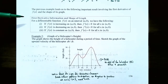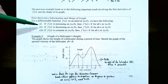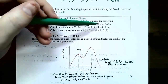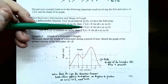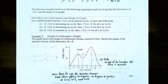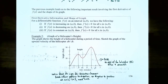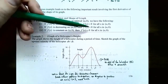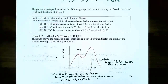This leads to an important result: First Derivative Information and the Shape of the Graph. For a differentiable function f(x) on interval (a, b): (1) if f(x) is increasing, then f'(x) > 0 for all x in (a, b); (2) if f(x) is decreasing, then f'(x) < 0; (3) if f(x) is constant, then f'(x) = 0. So the function increasing means the tangent line slope is positive, decreasing means it's negative, and constant means the derivative is zero.